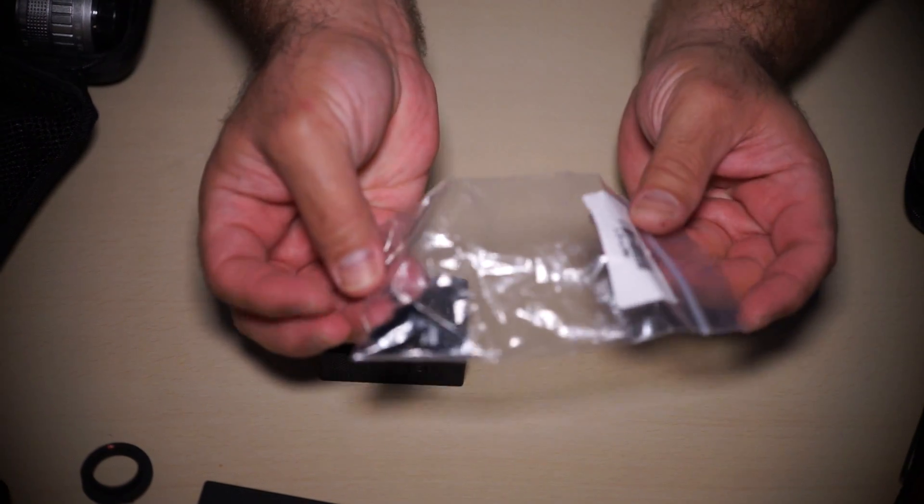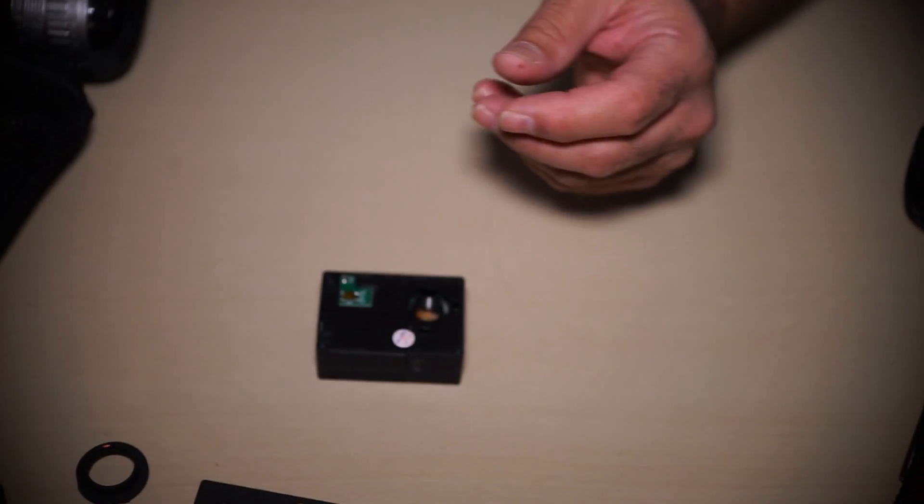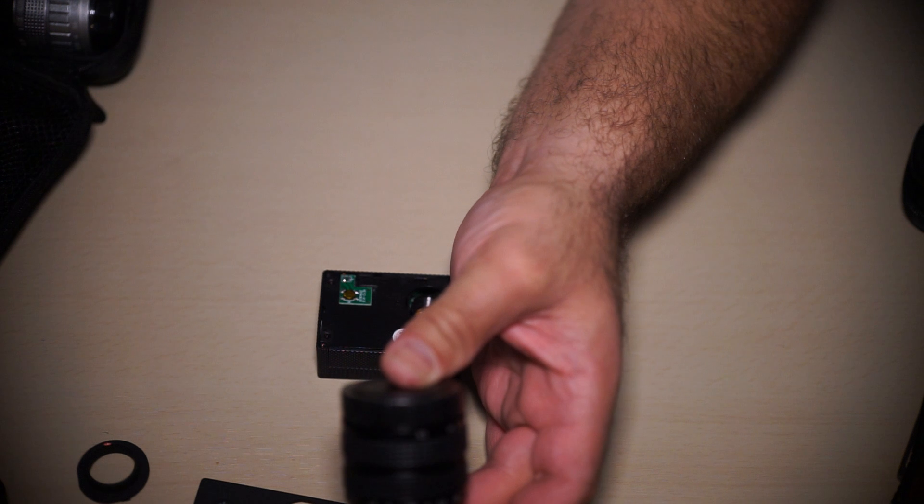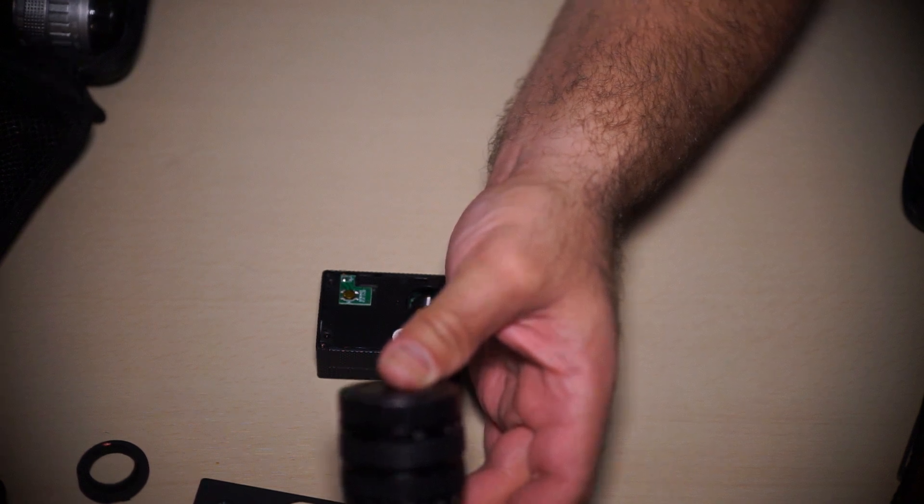Here's the original lens that I have from it. Here's the lens that I hope to put on it. This is the Fujian 35mm f1.7 C mount lens.